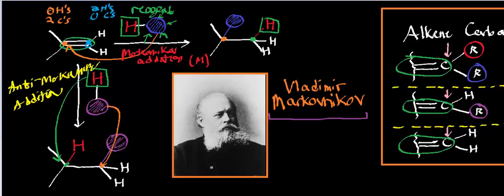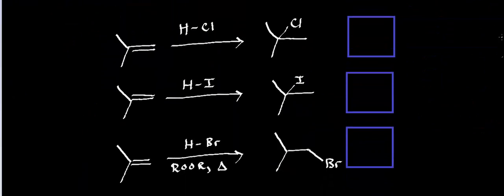There are a couple of important ones we're going to look at in future videos. But whenever we start talking about addition reactions, you have to understand Markovnikov and anti-Markovnikov additions. In Markovnikov, the group adds to the most substituted side. In anti-Markovnikov, it adds to the least substituted side. So hopefully that makes sense. Now let's look at some examples — we're going to look at the general reaction and decide whether or not it's Markovnikov or anti-Markovnikov. I'll denote anti-Markovnikov as AM.